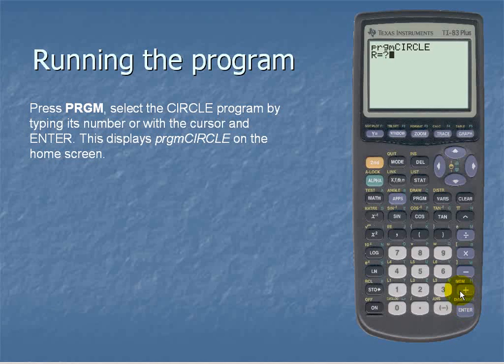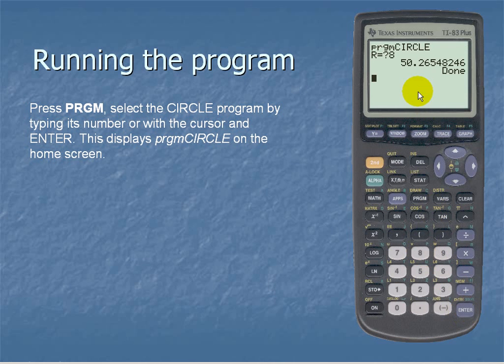So notice that we're prompted for R which is the radius. So let's say our circle has a radius of 8. And once we hit enter it gives us our circumference.